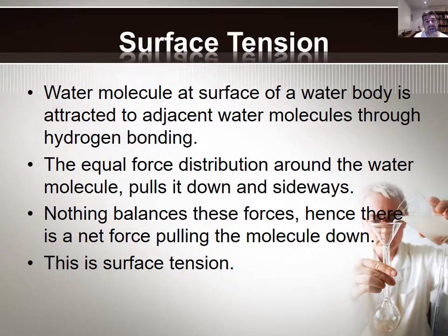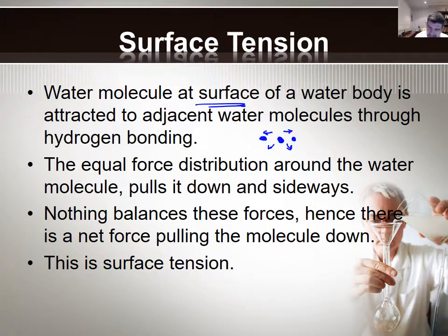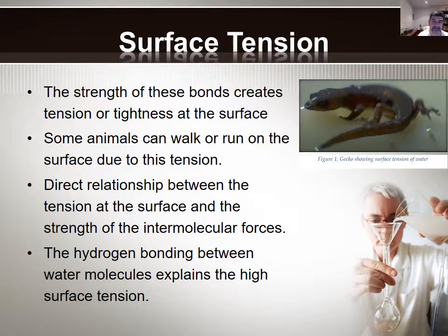Surface tension is something we looked at during your recent practical activity. The water molecules at the surface of the water body are the significant ones when discussing surface tension. A surface molecule is attracted to adjacent water molecules on either side and also to molecules below it in the water column. This equal force distribution pulls the surface molecule downwards and sideways, but there is nothing pulling it upward, creating an overall unbalanced force — a net inward pull. This is why there is a little bit of tension, kind of like the surface of a trampoline.